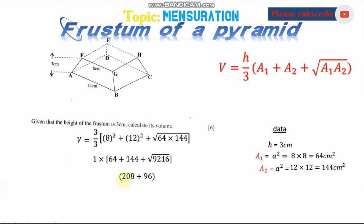The next step is to add the two numbers: 208 plus 96. So the final answer is 304 centimeter cube. This is the answer. You are done.